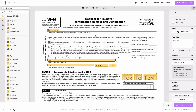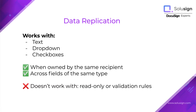You also need to be aware of a couple of limitations. Data replication will only work across fields owned by the same recipient and across fields of the same type. So we can't get data to copy from a text field into a drop-down, or from a drop-down into a checkbox.